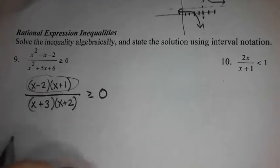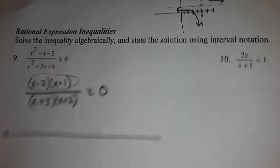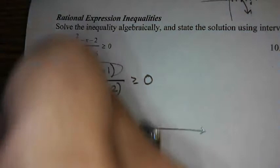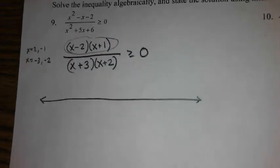Your asymptotes are going to come when your denominator equals 0, because that's where you'll get your undefined. So all of these factors are going to produce a location on the number line that we're going to have to test in and around. x equals 2, x equals negative 1, x equals negative 3, x equals negative 2. So I just need to orient these properly to where they would fall.